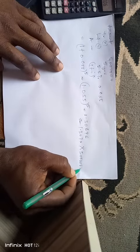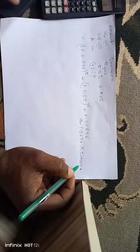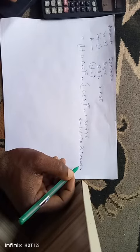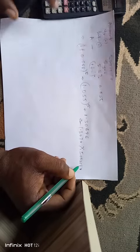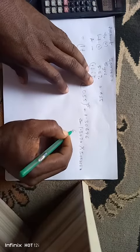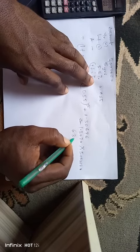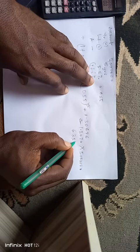1.3070 times 5 million naira equals 6 million 535,000 naira.